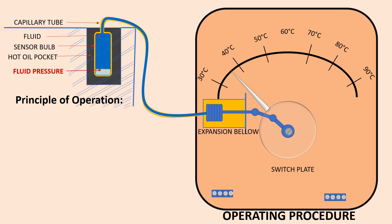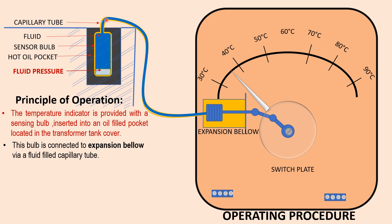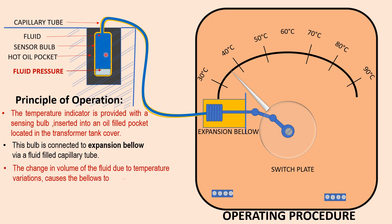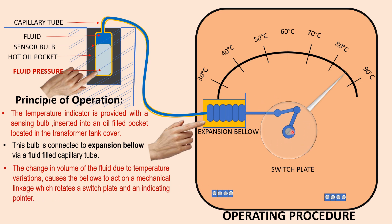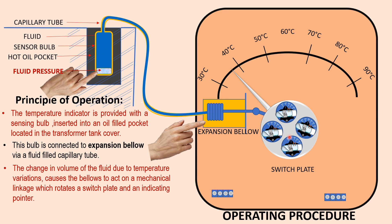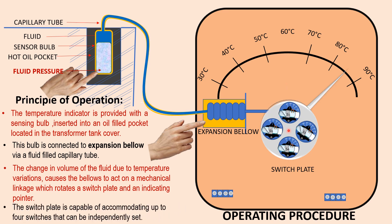Principle of operation: The temperature indicator is provided with a sensing bulb inserted into an oil-filled pocket located in the transformer tank cover. The bulb is connected to the expansion below via a fluid-filled capillary tube. The change in volume of the fluid due to temperature variations causes the below to act on a mechanical linkage which rotates a switch plate. The switch plate is capable of accommodating up to four switches that can be independently set.